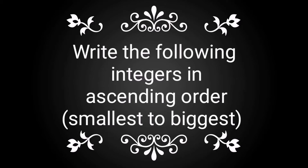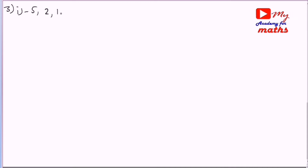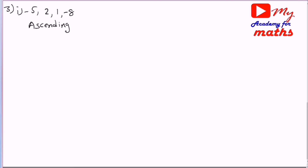Ascending order means the smallest number to the largest number. First one: minus 5, 2, 1, minus 8. Let's arrange these in ascending order.